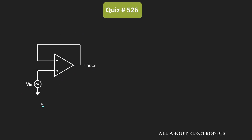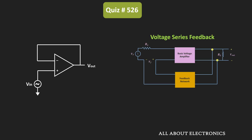If you look at this circuit from the feedback perspective, then it is an example of voltage series feedback. Here the output voltage is sampled and connected to the input side in a series connection, because the difference between the input and the feedback voltage becomes the new input to the amplifier — which is exactly what happens in voltage series feedback. We sample the output voltage, a fraction of it is given to the input side, and then the difference between the input and feedback voltage is given to the amplifier.